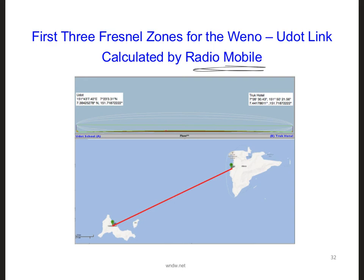Here is a RadioMobile result for our link from Wayno here to UDOT. The three white lines, which might be a little hard to see, show the first three Fresnel zones. And you can see, perhaps faintly here, that the first Fresnel zone is clear when we use the antenna heights that we've chosen.